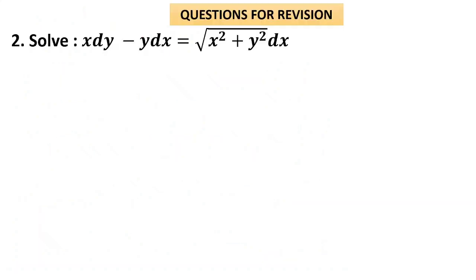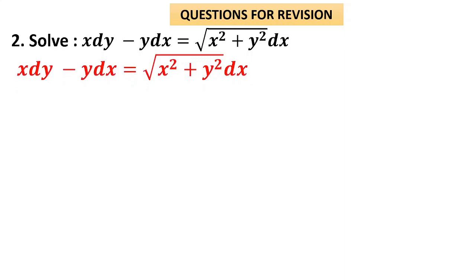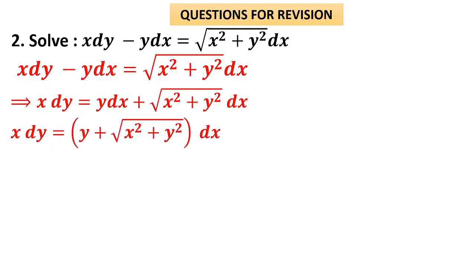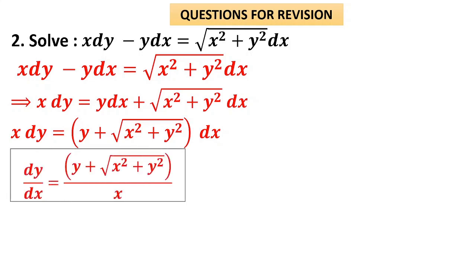Question 2: Solve x dy − y dx = √(x²+y²) dx. Rearrange: x dy = y dx + √(x²+y²) dx, so x dy = (y + √(x²+y²)) dx. Dividing both sides by x: dy/dx = (y + √(x²+y²))/x. In the numerator, y has power 1 and √(x²+y²) also effectively has power 1 since the variables are inside a square root. So the equation is homogeneous of degree 1.